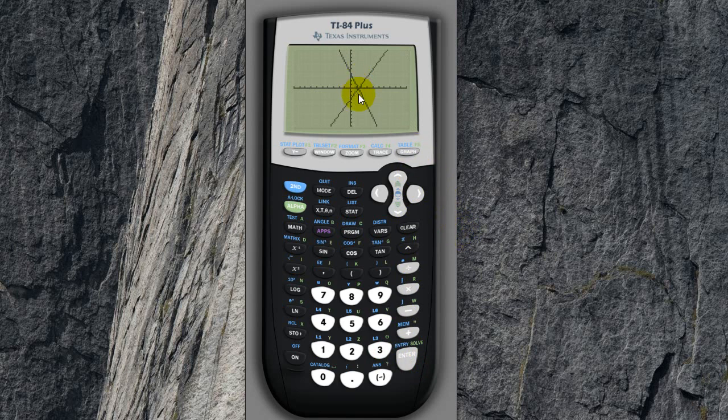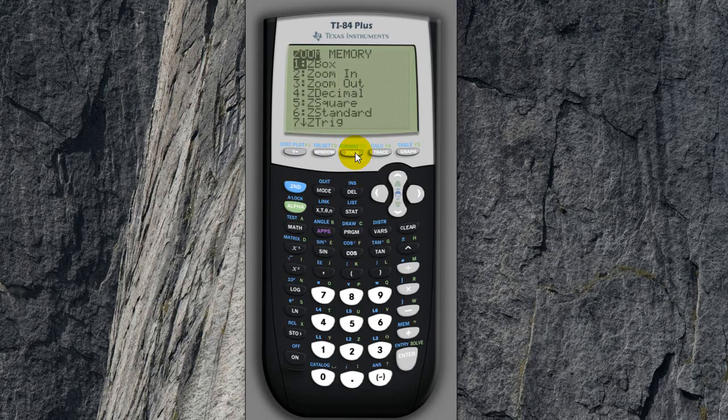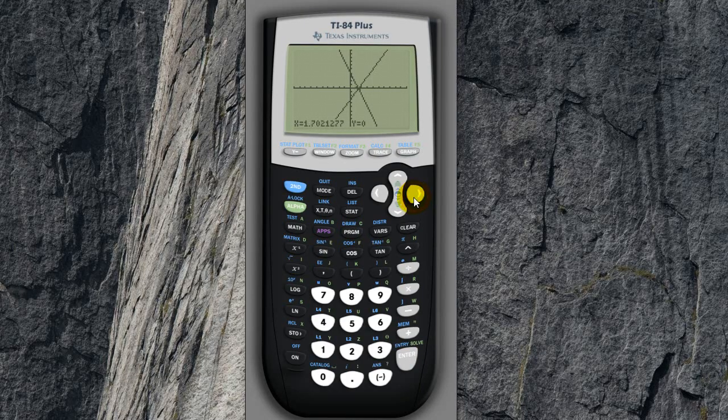So they intersect at about here. So let's zoom in on that point. So let's press zoom and choose zoom in. And let's go to where they intersect. Press enter. So it zooms in a bit on that.